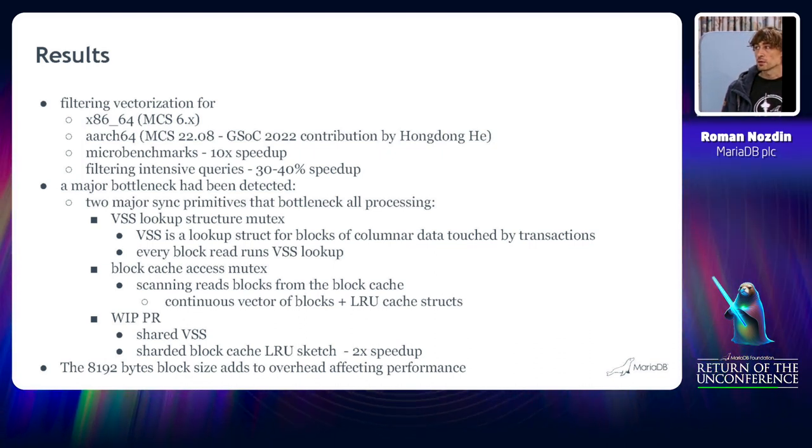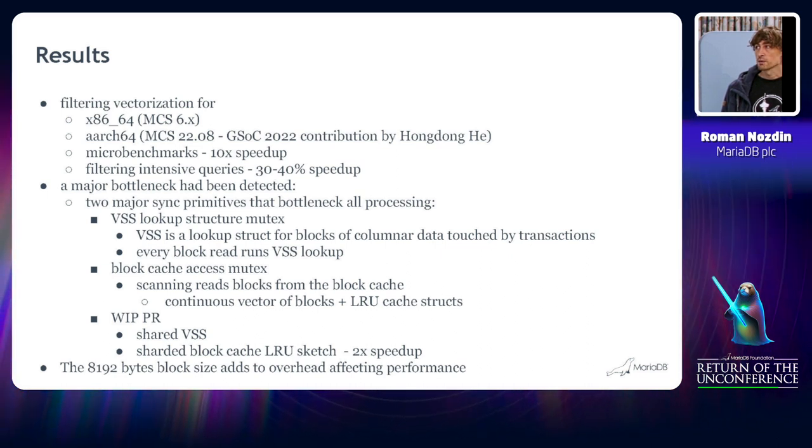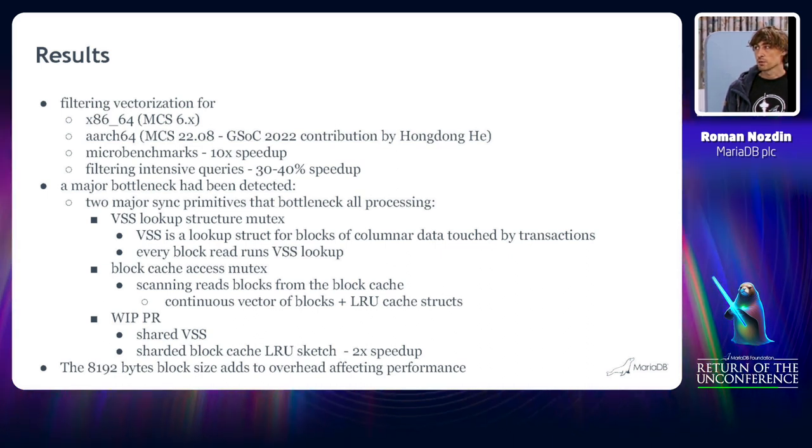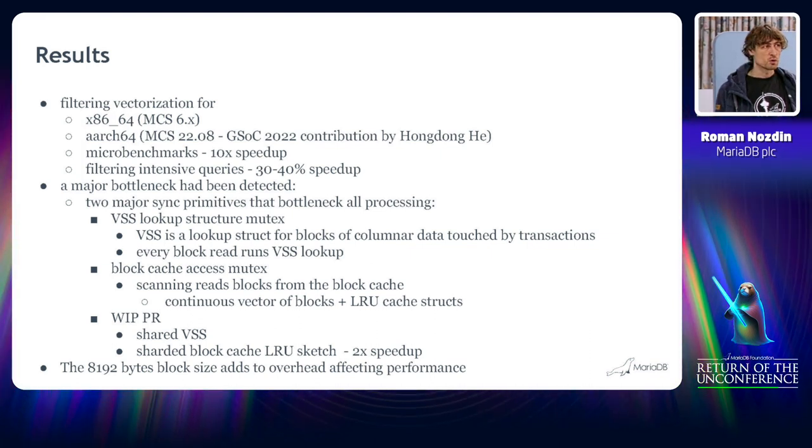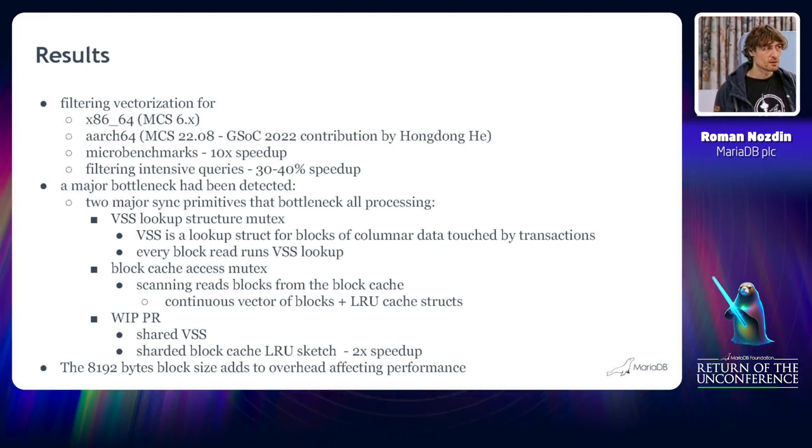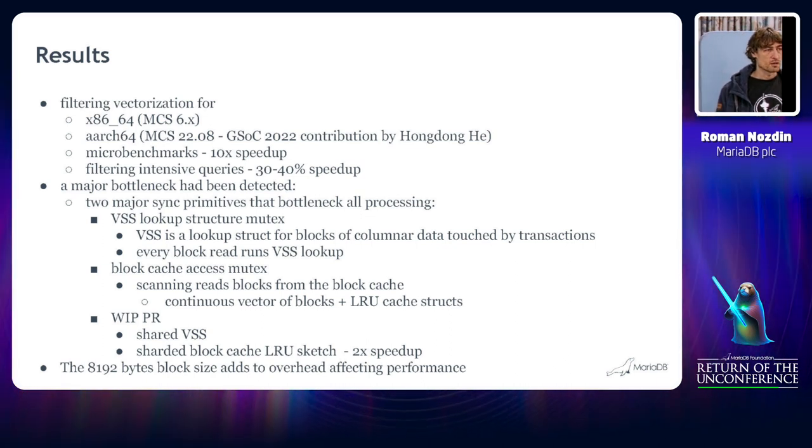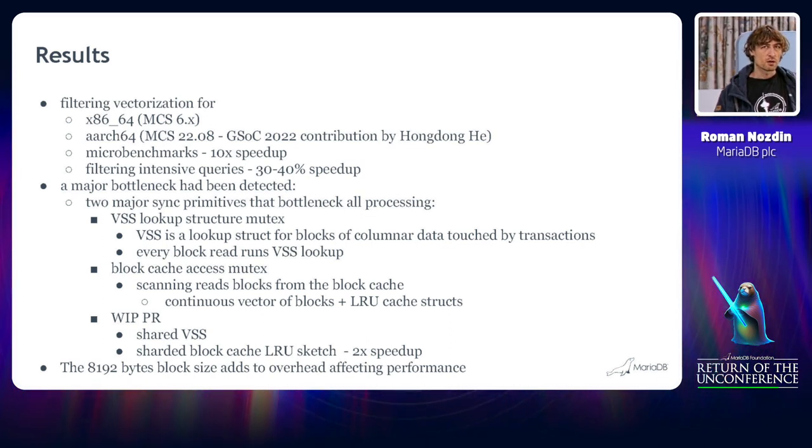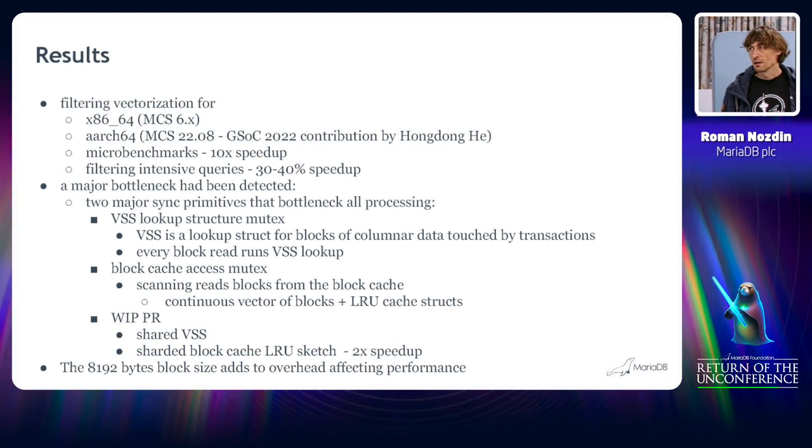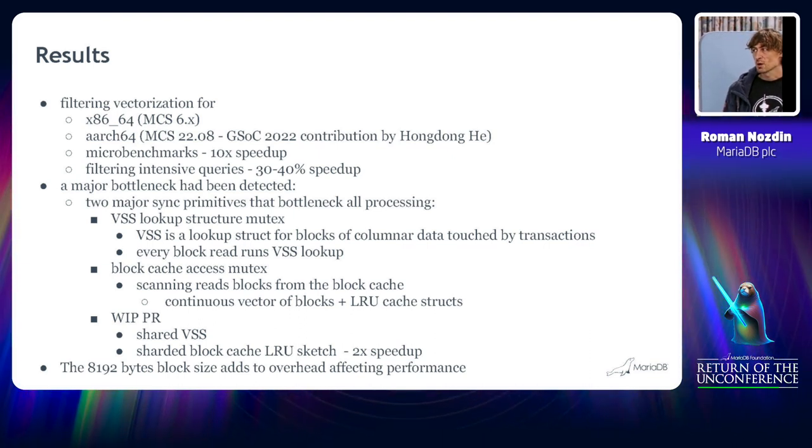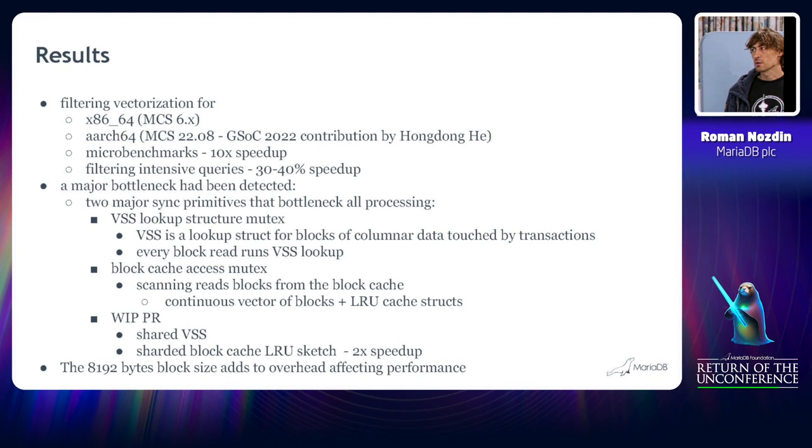Another mutex that affects the performance, basically reduces the performance from the vectorization, is the block cache access mutex. That's a widespread thing for database engines that have a common buffer cache.